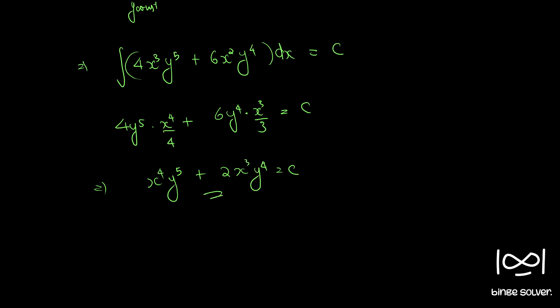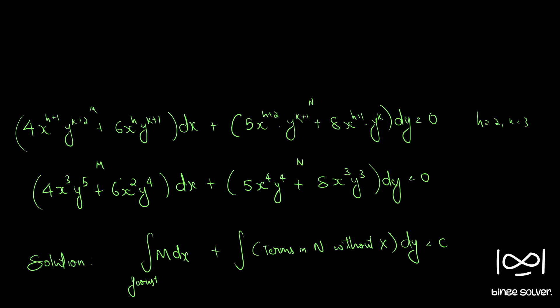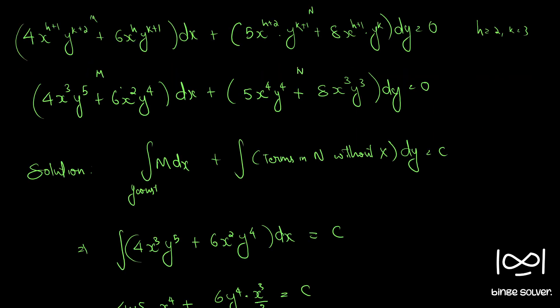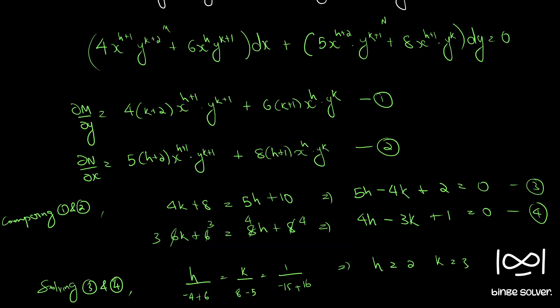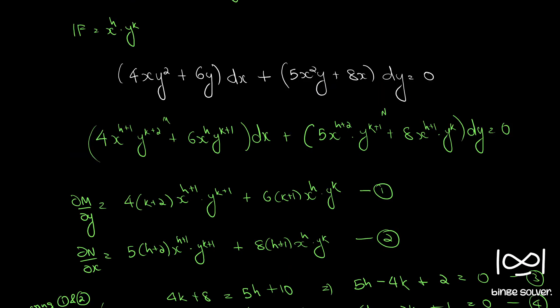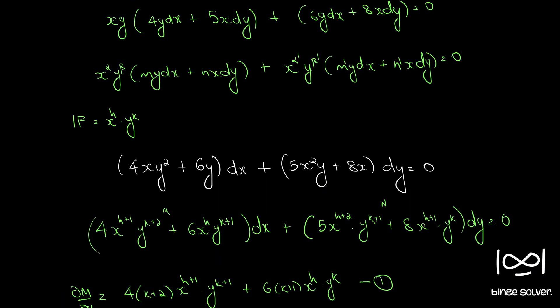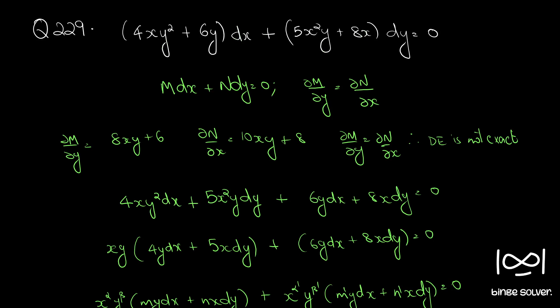So this is the final solution to our question. We applied Rule 6, found the integrating factor x²y³, and the solution to question number 229 is x⁴y⁵ + 2x³y⁴ = c.